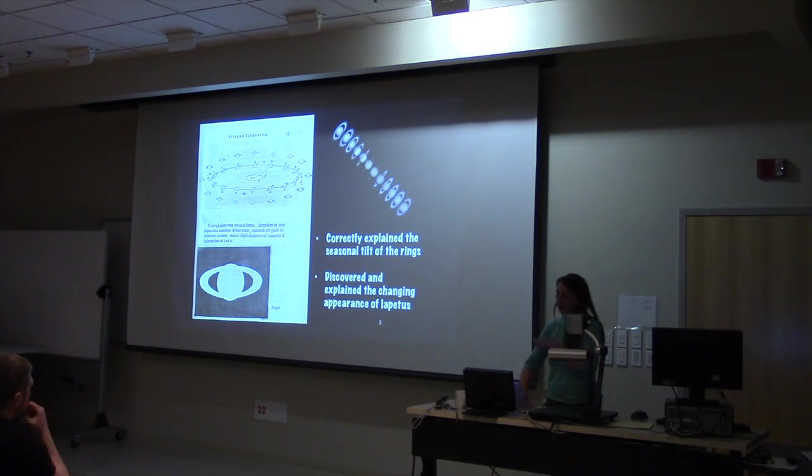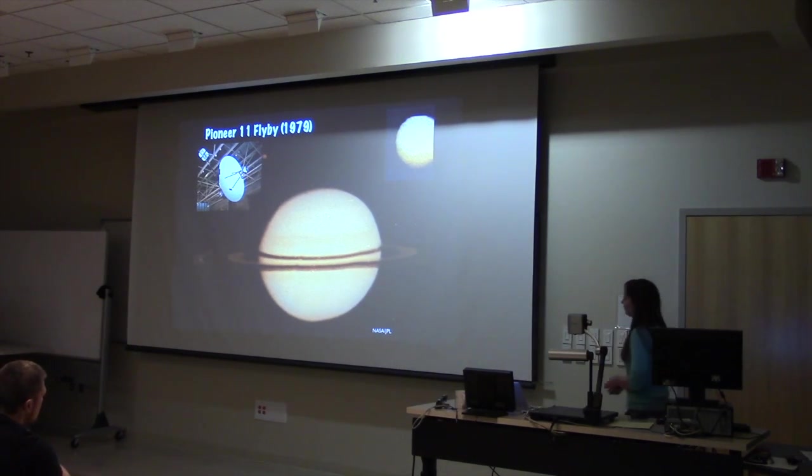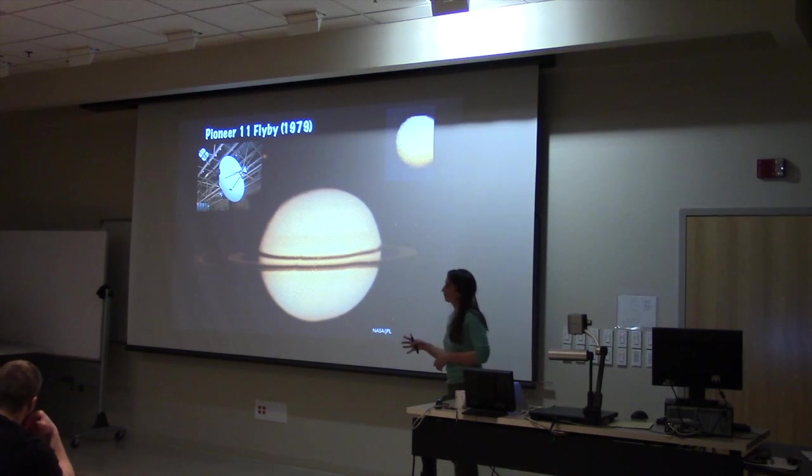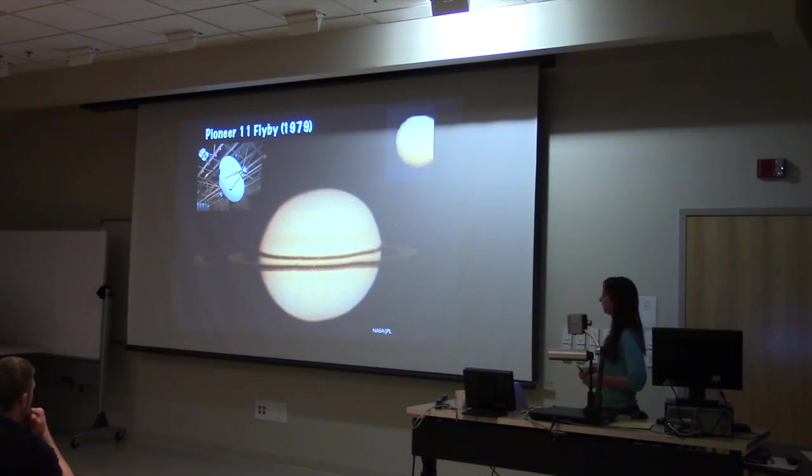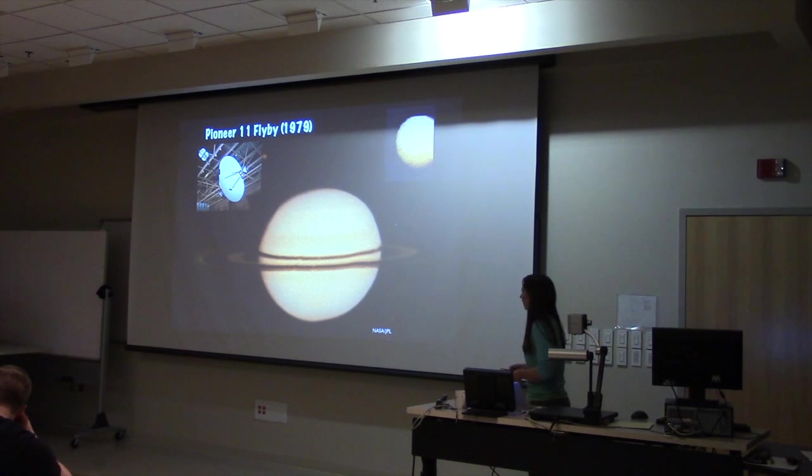So if we go forward many hundreds of years, we can start going to the first spacecraft that's visiting the Saturn system. Cassini is actually the fourth spacecraft to visit Saturn. The first was Pioneer 11, which visited Saturn in 1979. This is a replica of the Pioneer spacecraft.